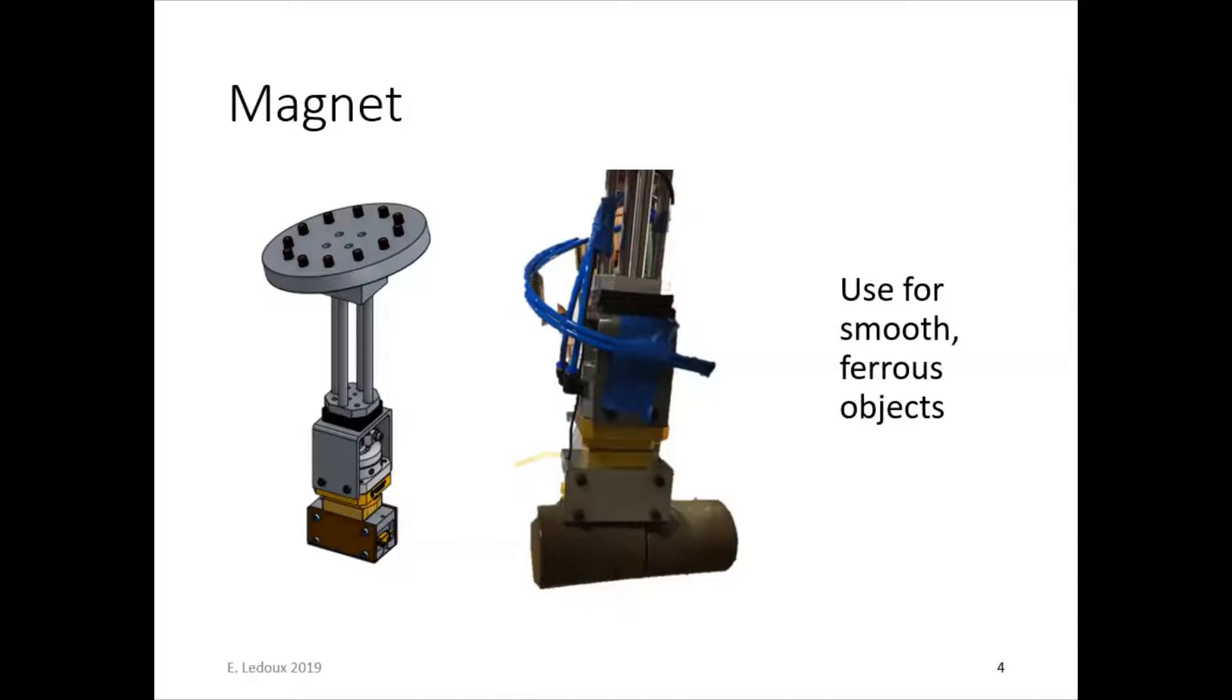Now, pros and cons to this is basically you don't have to get super accurate with the magnet. You can just get close onto the part and it'll snap in. But then on the flip side, the magnet can sometimes pick up more than one object. Like you can see here in this picture in the middle, it's got the extra block of steel connected to it.